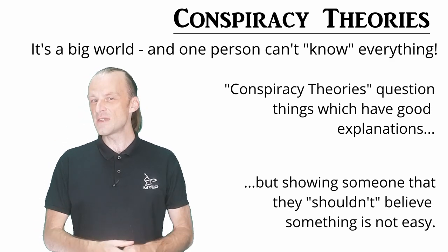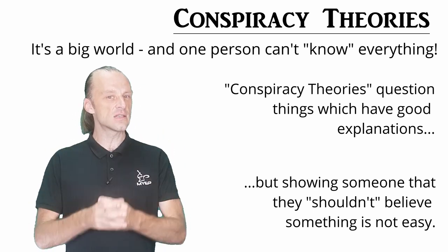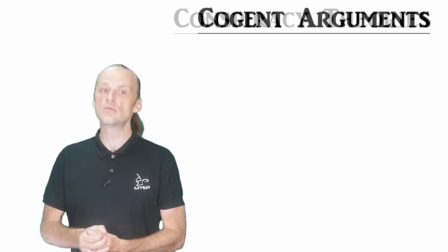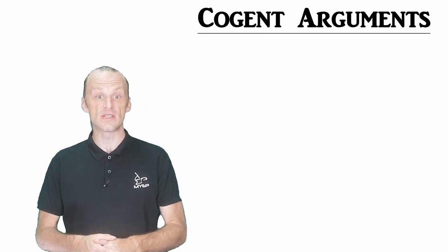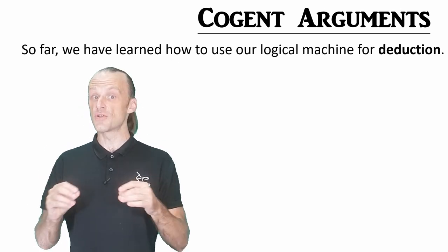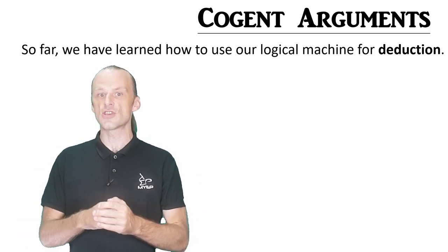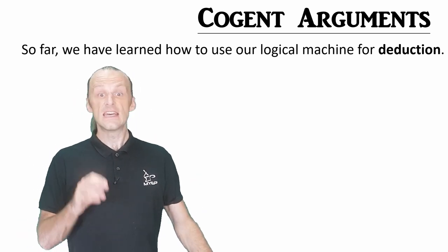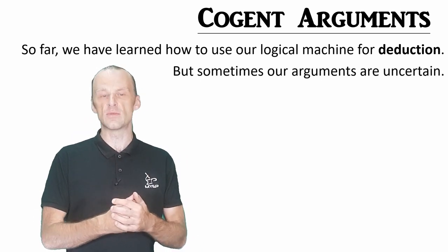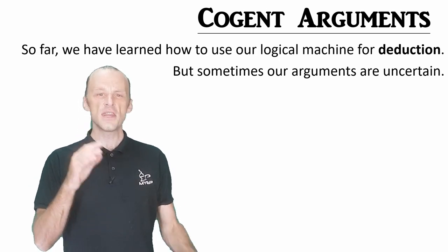Sometimes our premises cannot be 100% confirmed, and this lets tiny uncertainties creep into our logical machinery. Here we meet a whole new difference in logical arguments, and we see the formal meaning of a cogent argument. Our logical machine preserves truth values. As long as we make valid moves with complete information, we can be confident in our conclusions. This is called deduction or deductive logic.